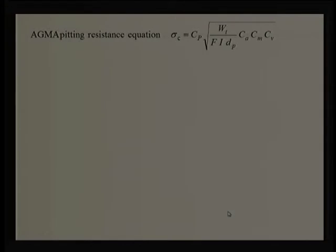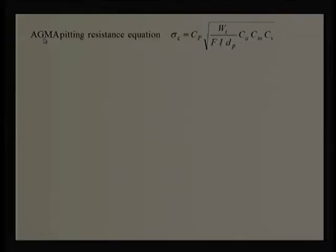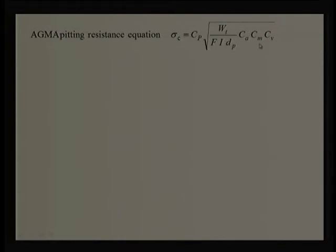AGMA (American Gear Manufacturing Association) is not satisfied with this basic equation because it does not involve velocity-related parameters, misalignment effects, or shock and impact loading. Therefore, AGMA included three more parameters: C_A (application factor), C_M (face width / load distribution factor), and C_V (velocity factor). These factors naturally increase the effective stress level.